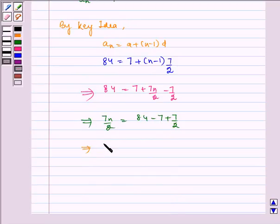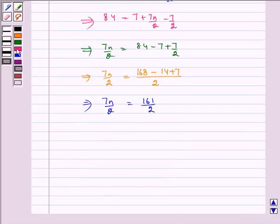Which implies 7n/2 equals 161/2. Now we see that this 2 gets cancelled, so n equals 161/7.